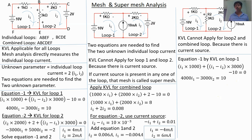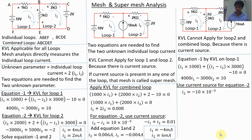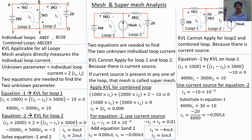For the second equation, since we cannot apply KVL for loop 2 or the combined loop, we use the current source directly. I2 and the 10 milliampere current source flow in opposite directions, so I2 equals minus 10 milliampere. Substituting I2 into equation 1, we get I1 = minus 5 milliampere. Final answers: I1 = minus 5 milliampere, I2 = minus 10 milliampere.